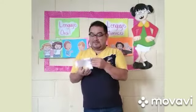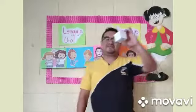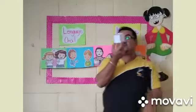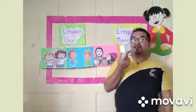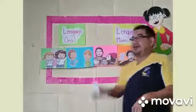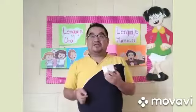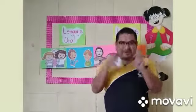Vamos a ver acá. Esta pieza va para acá. Bueno chicos, después de que ya armamos nuestro cubo, vamos a jugar con cada uno de nuestros familiares. Vamos a lanzar nuestro cubo y el gesto que le quede a la persona, esa persona tiene que hacer esa gesticulación. Si yo tiro el dado y me sale el gesto de llorar, yo me voy a poner de pie y voy a hacer el gesto que estoy llorando.